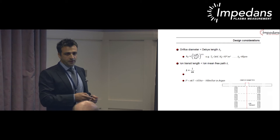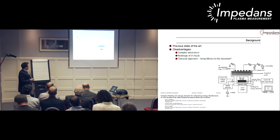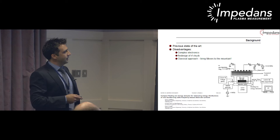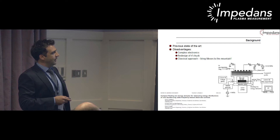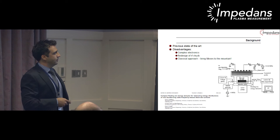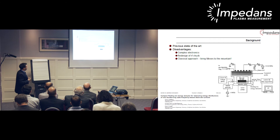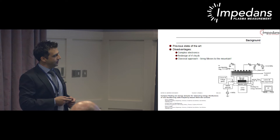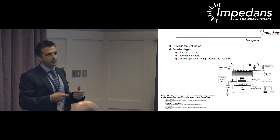Before this technology was developed, the state of the art was published by Eric Edelberg in 1999. They had an ICP etcher at LAM with an ICP source and built all electronics into the RF bias chuck—a classical approach to deal with RF bias. But signals then had to be communicated via optical fibers, making it quite a complicated system. Commercially, this is not feasible since you cannot go around redesigning people's RF chucks.